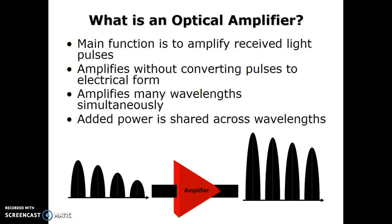An optical amplifier looks like a normal audio amplifier. Instead of a normal audio amplifier, it has the additional equipment of an optical converter on the input side and also on the output side. That means it receives the optical signal, converts it into an electrical signal, the amplifier amplifies the electrical signal, and then the amplified electrical signal is again converted into the optical signal. This is how the nominal optical amplifier works.